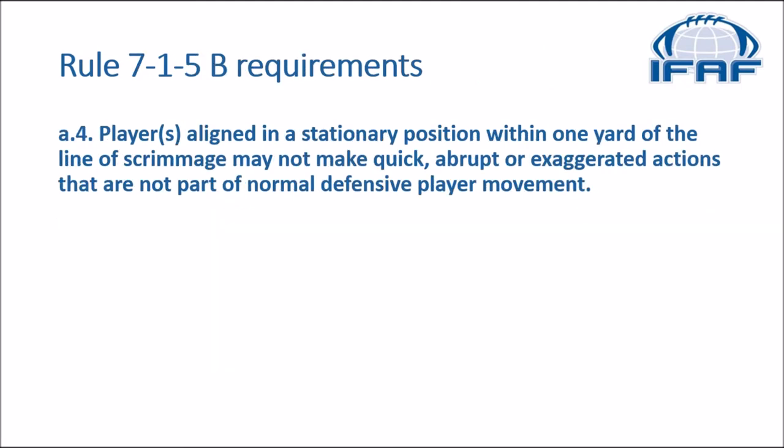Rule 715 talks about B requirements. Players aligned in a stationary position within one yard of the line of scrimmage may not make quick, abrupt, or exaggerated actions that are not part of normal defensive player movement.